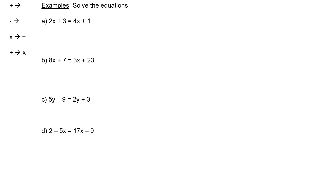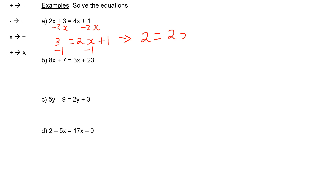Here are some examples. Remember that the opposite of plus is minus, so if we have a plus 3 we would subtract 3 from both sides, and if we have a plus 2x we can subtract 2x from both sides. In the first question, the aim is to get x on its own — all x's on one side and all pure numbers on the other. I'm going to subtract 2x from both sides because there are more x's on the right-hand side. That gives me 3 equals 4x take away 2x, which is 2x, plus 1. I subtract 1 from both sides, giving me 2 equals 2x. Dividing both sides by 2 leaves me with x equals 1.